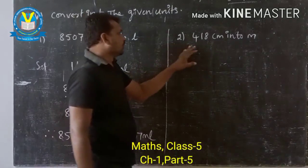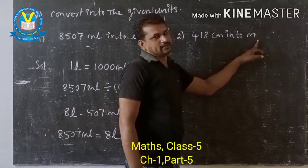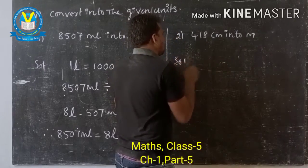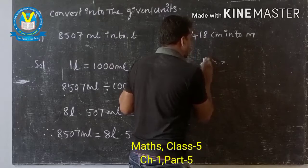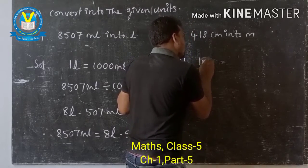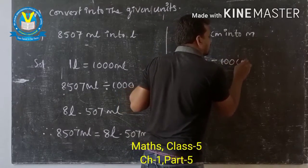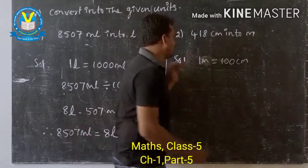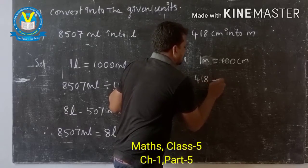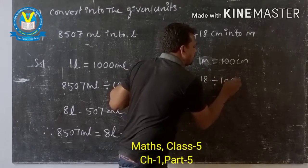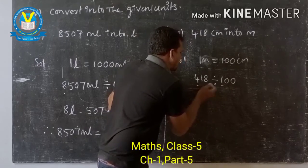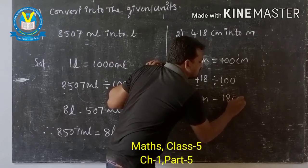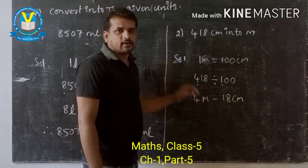Now the next one: 408 centimeters into meters. We know that 1 meter equals 100 centimeters. So 408 is divided by 100. That gives 4 meters and 8 centimeters.